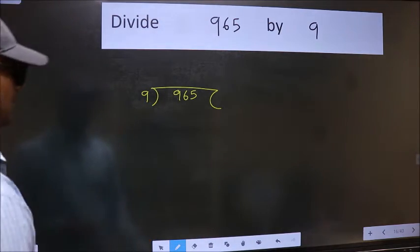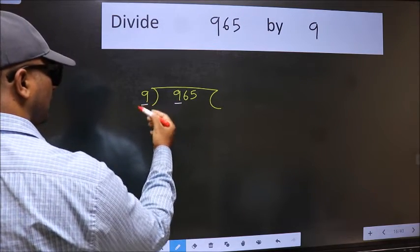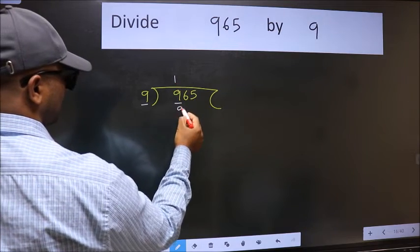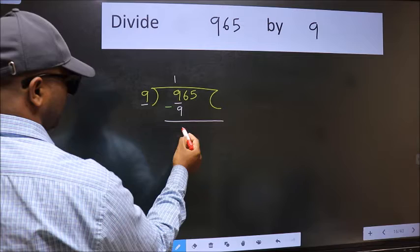Next, here we have 9 and here 9. When do we get 9 in 9 table? 9 once 9. Now we should subtract. We get 0.